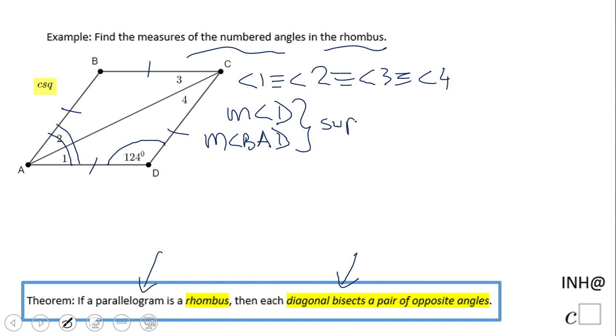they are supplementary. So basically, if I want to find the measure of angle BAD, I'm gonna do 180. Supplementary means the sum is 180. I'm gonna take away 124, so that will be